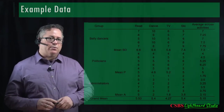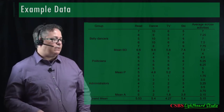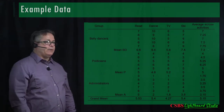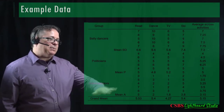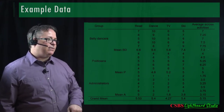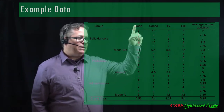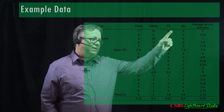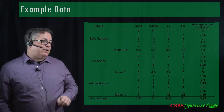Let's talk about how that actually works. The approach is very similar — it's set up exactly the same way as a mixed ANOVA. You have between groups: belly dancers, politicians, administrators, and you're asking them to rate how much they like to read, to dance, to watch TV, and to ski.